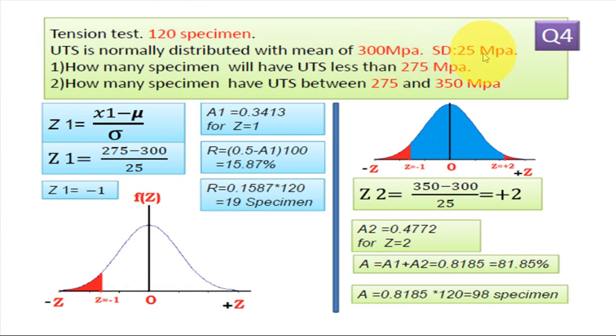And standard deviation 25 MPa. So how many specimen will have ultimate tensile strength less than 275 MPa, or how many specimen have ultimate tensile strength between 275 to 350 MPa.